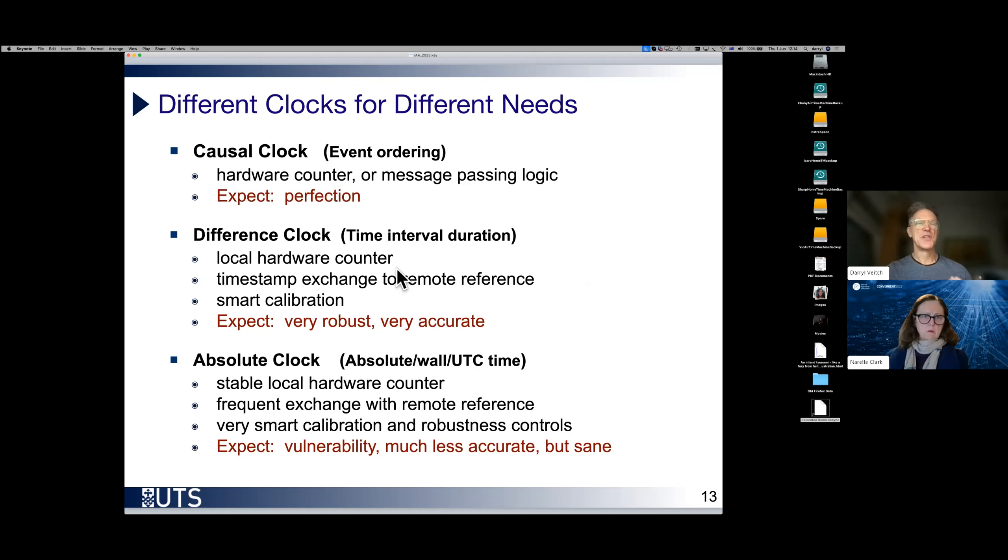Here's a point which is not very often discussed. We need different clocks for different needs. If we had a perfect clock, which is perfect in all respects, then of course that's all you'd ever need. But in the real world, every system we have is imperfect. So it makes sense to specialize in order to get the result that we want.